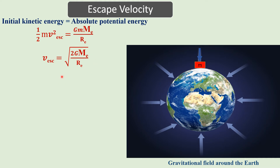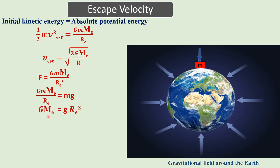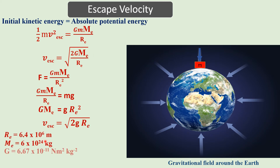For different planets we change the mass and radius accordingly. We know that the gravitational force equals G·m·M_e / R² and also equals mg, so G·M_e = g·R_e². Substituting this into the escape velocity formula, we get an alternative form: escape velocity = √(2·g·R_e). We can use either formula to calculate escape velocity.